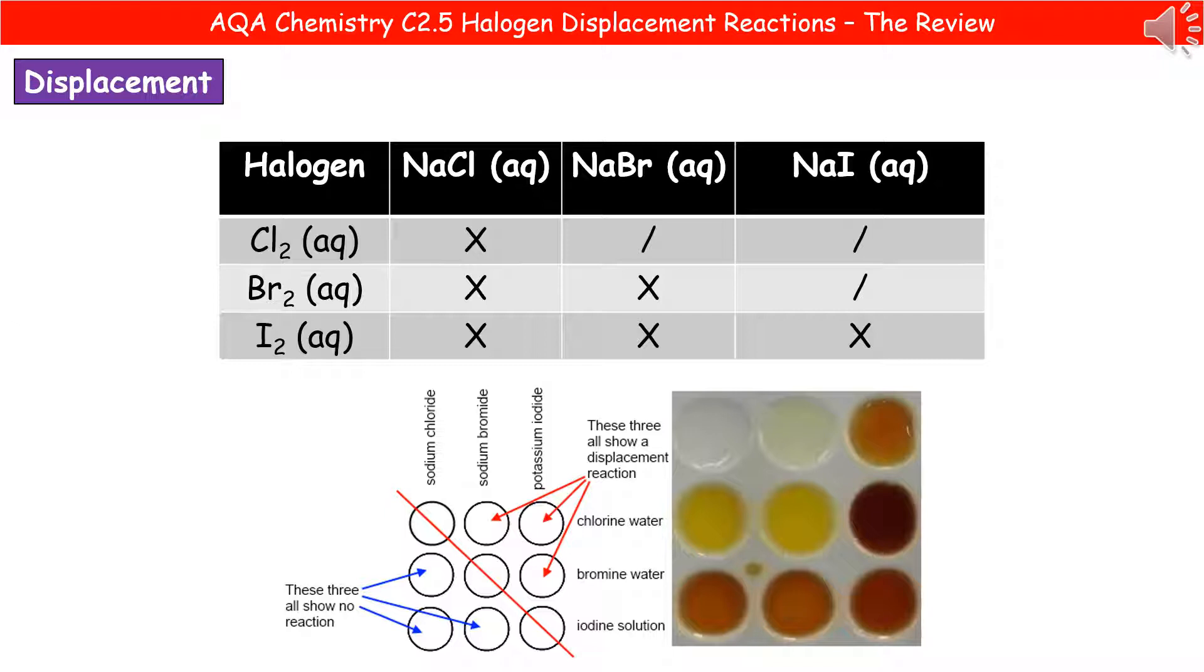But you'll notice bromine only displaces the iodine and iodine doesn't displace any of them because iodine is less reactive than both bromine and chlorine.